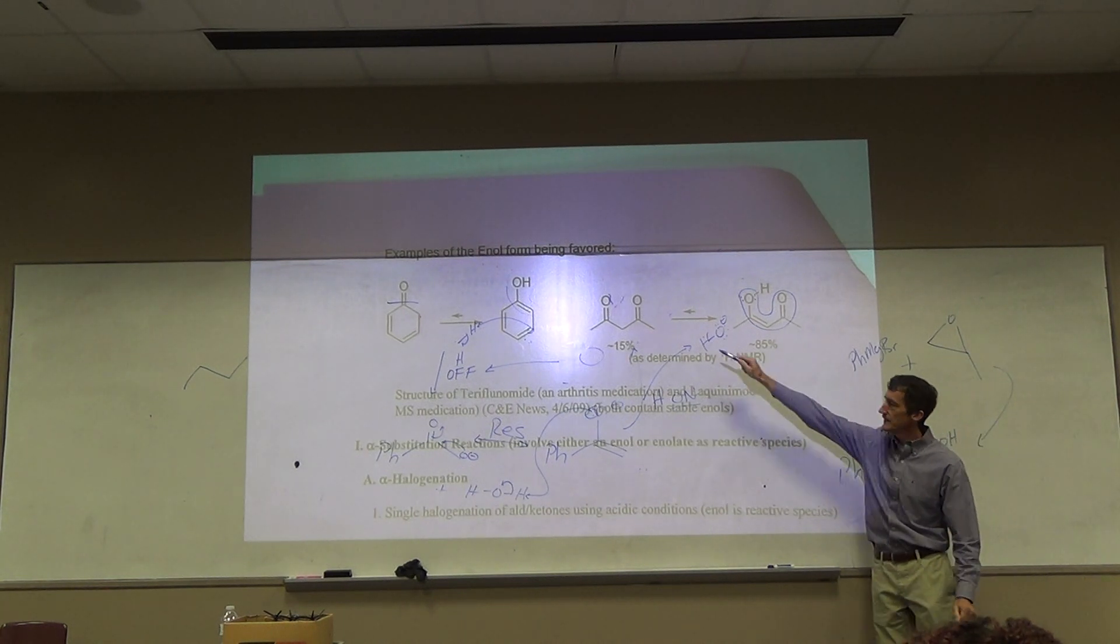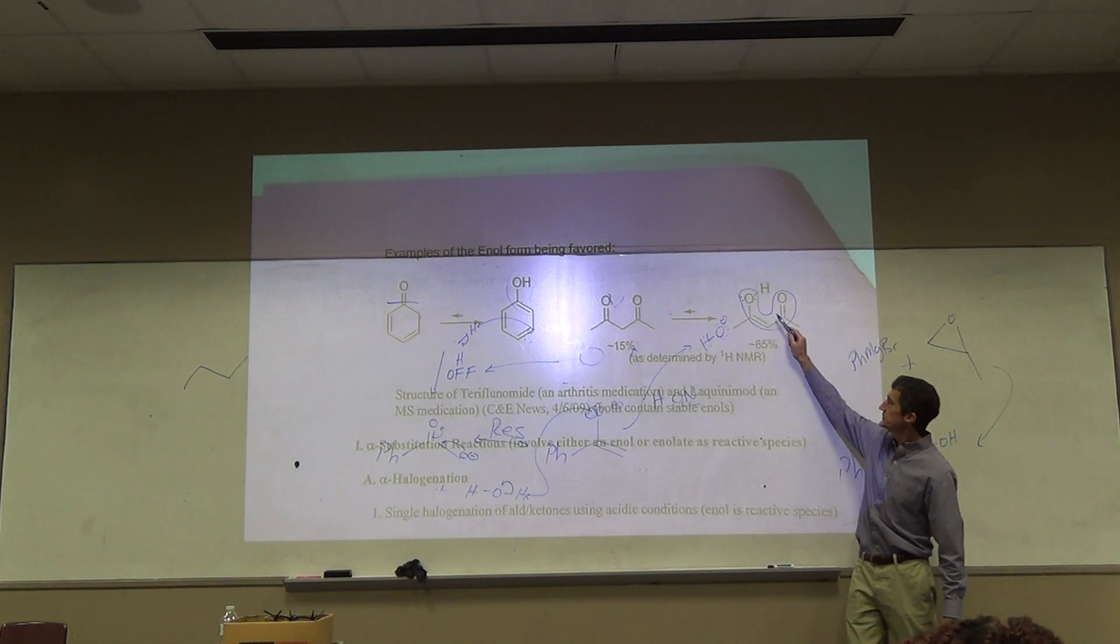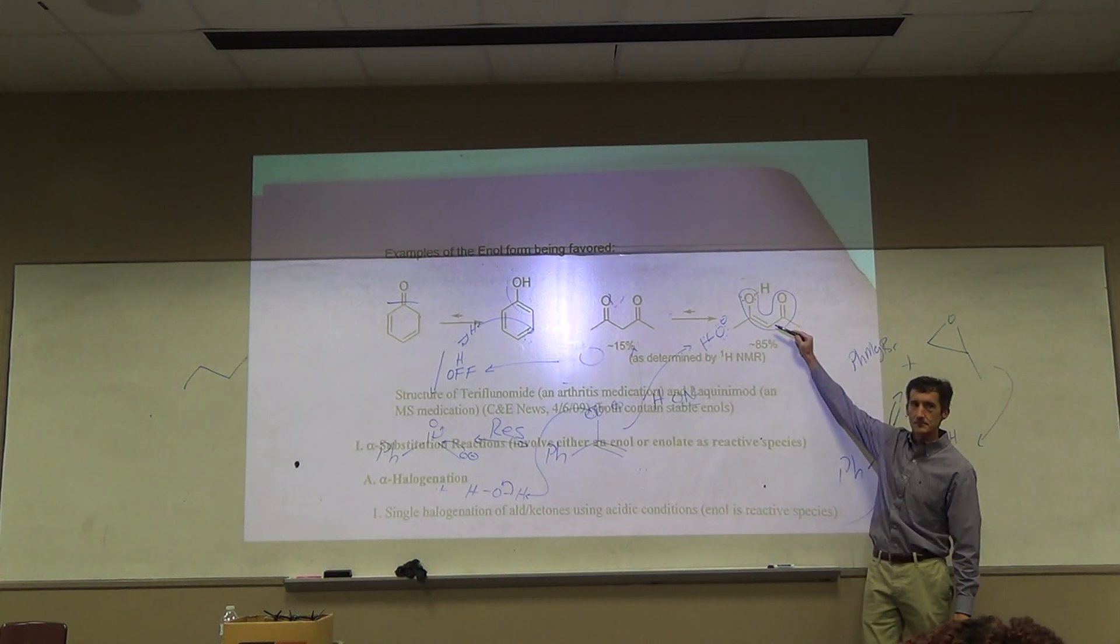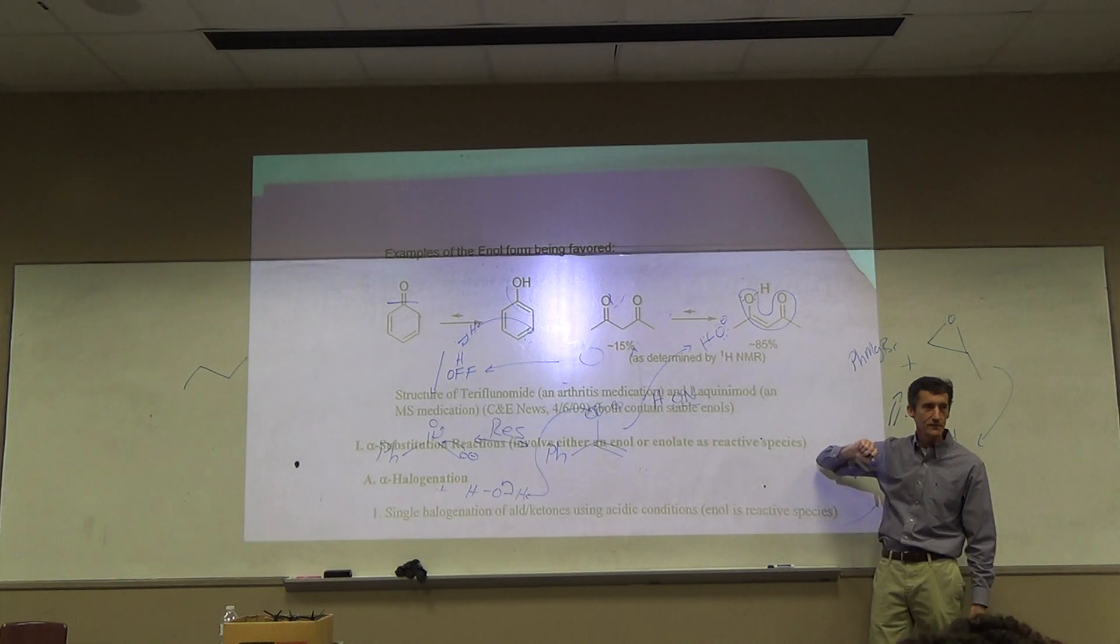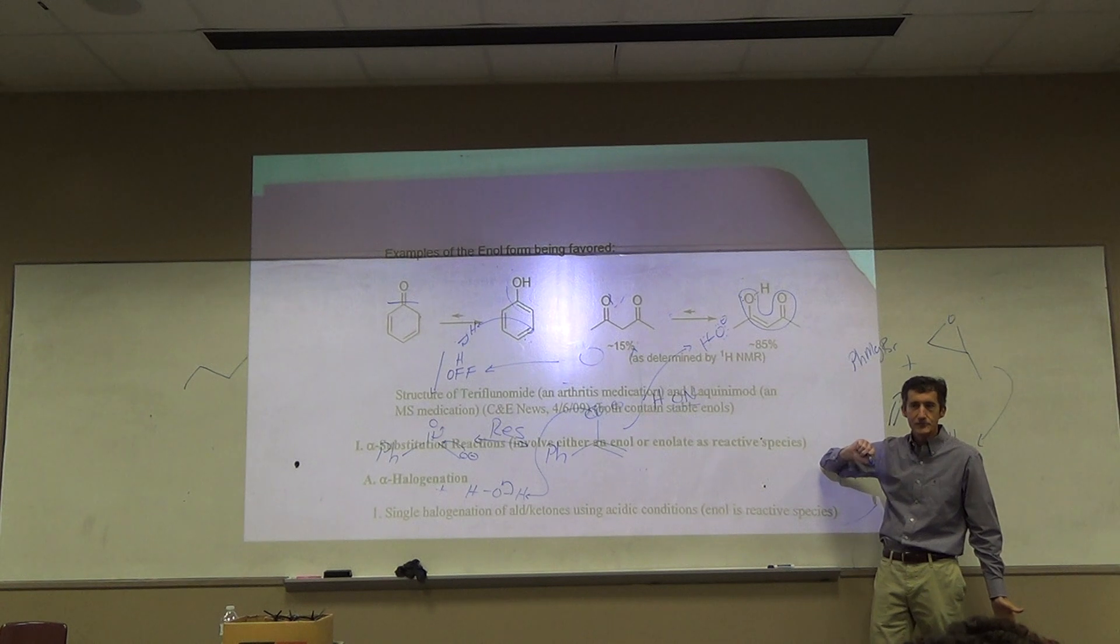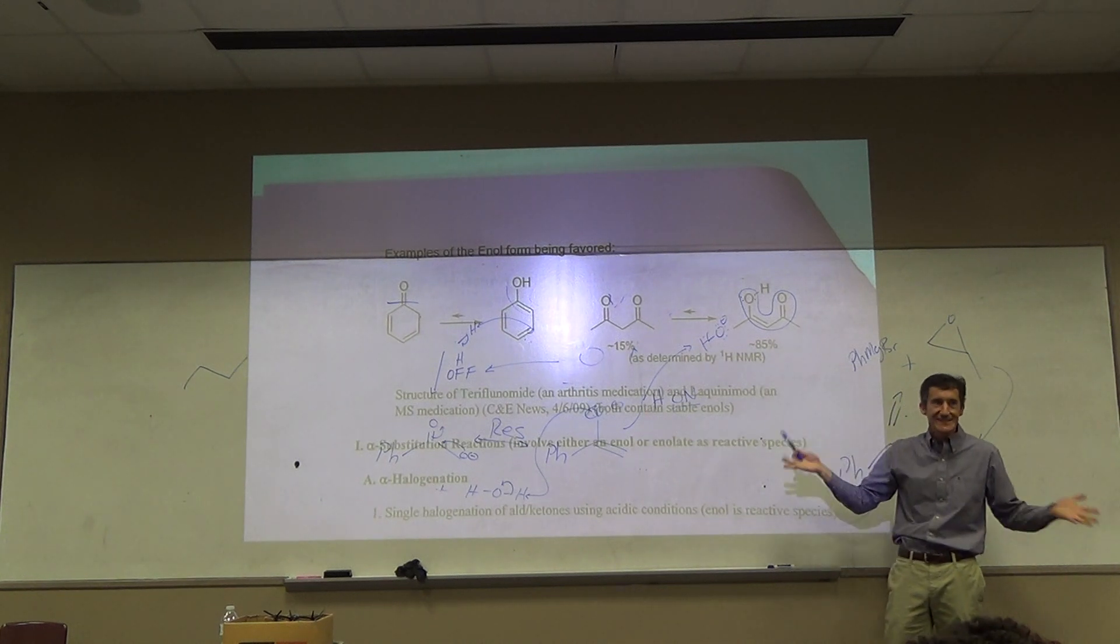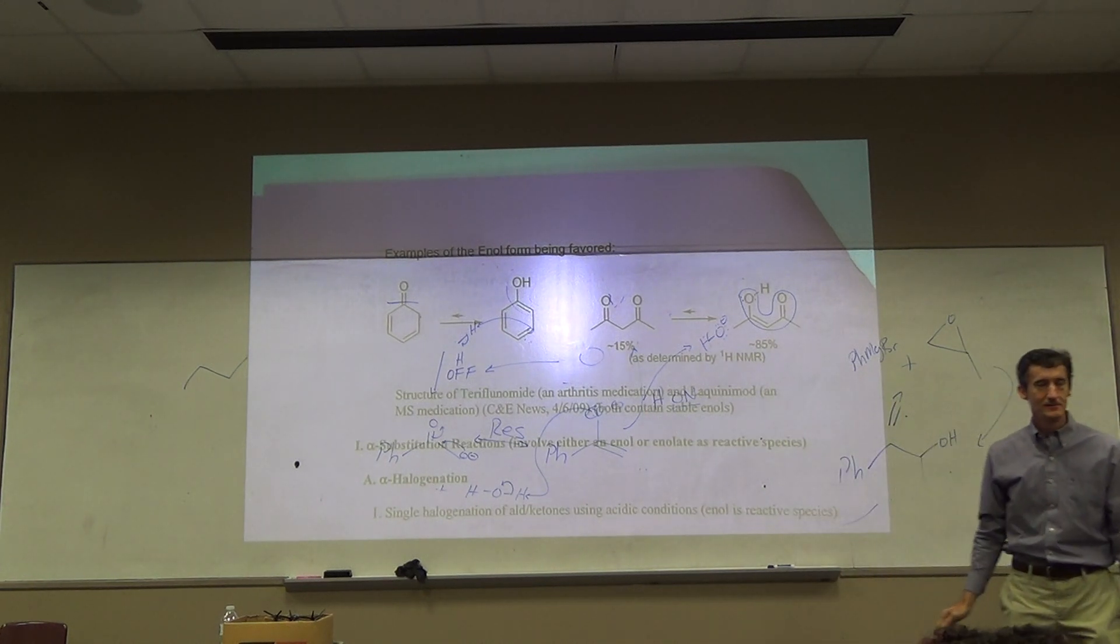Because you've really got both tautomers there. But this one predominates. And by the way you cannot purify that compound. There's no way to get this without that. Think about it, if you were to isolate this, it's just going to do this to you and it's going to form 15% of that. There's no way to keep this, that's how it exists.